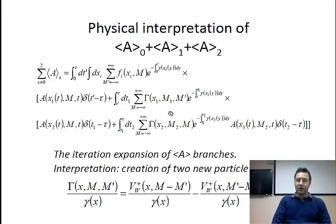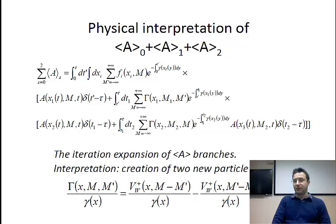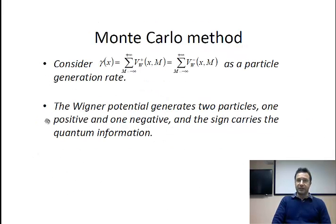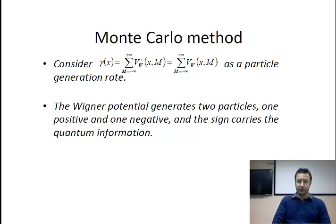The new element here is the gamma function, which we can interpret as the creation of two new particles: a positive one and a negative one. An extra term tells you that we keep the original particle. So we can now depict a Monte Carlo method where a particle, with some probability, will create a positive and a negative particle. Gamma is the particle generation rate, and the Wigner potential — also referred to as the Wigner kernel — generates two particles: one with a positive sign and one with a negative sign. The sign essentially carries the quantum information of the system.